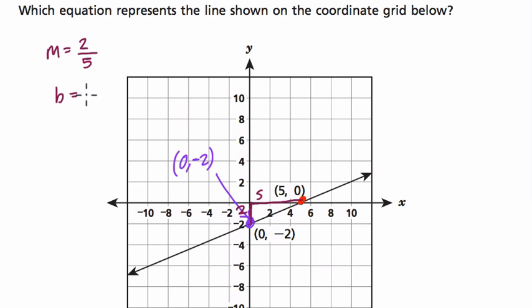B is the letter we use for our intercept, and that's just the y-value of the y-intercept point.